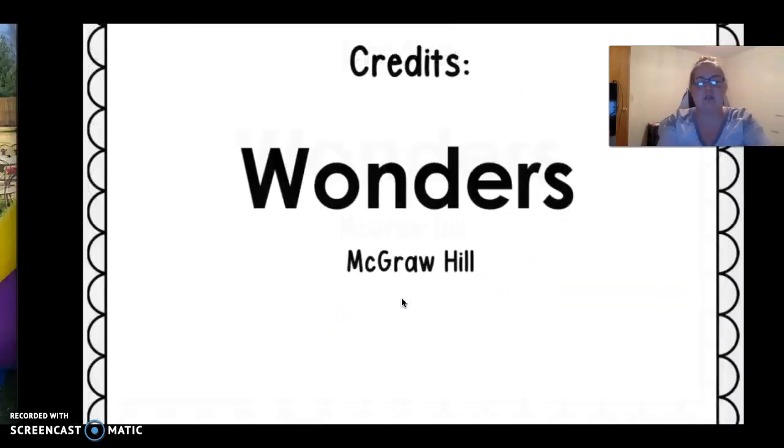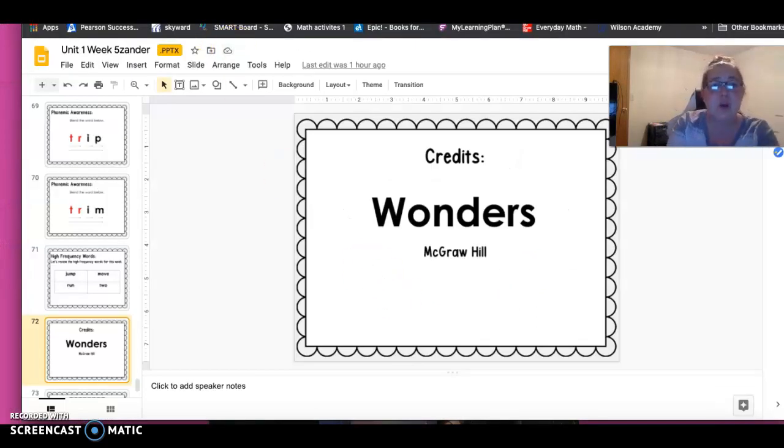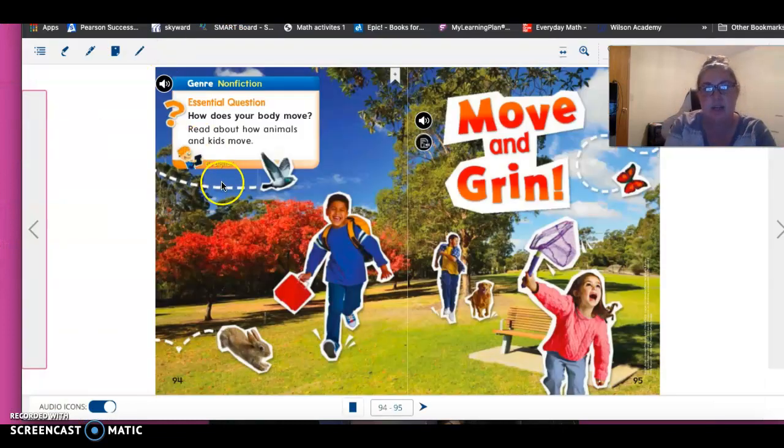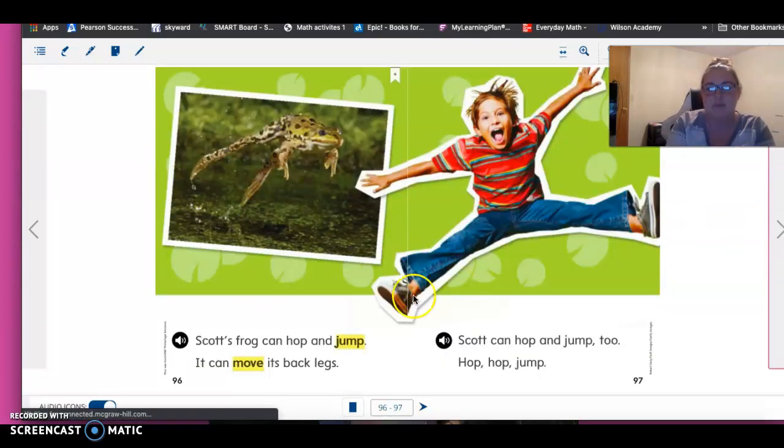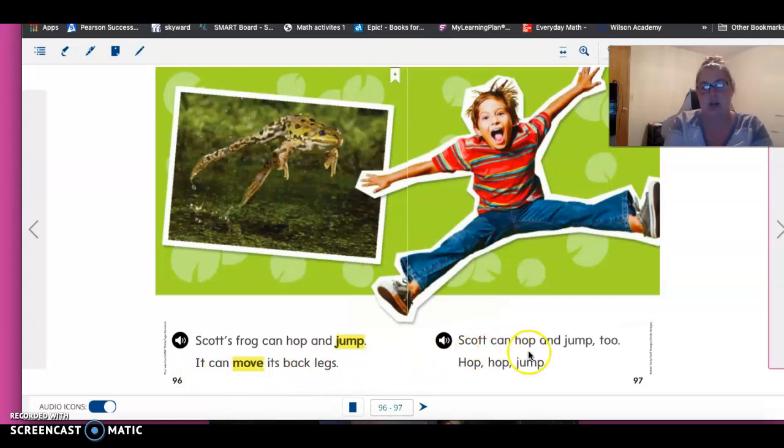All right. We are going to read a story together today. You've already read it once with me, so we're going to read it together today. So I want you to make sure that you're trying to read with me. Are you ready? Okay, here we go. Move and grin. Scott's frog can hop and jump. It can move its back legs. Scott can hop and jump, too. Hop, hop, jump.